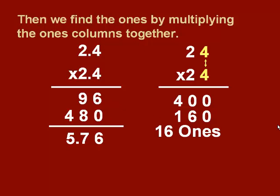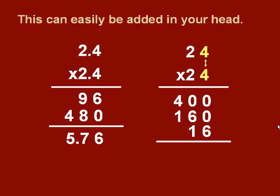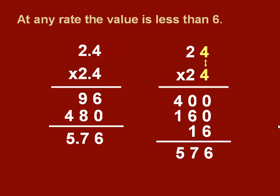Finally, we find the ones by just simply multiplying the ones column together. So 4 times 4 is 16. What's nice about this way is now we have simple numbers we can add in our head. So 400 plus 160 is 560 plus 16 is 576.